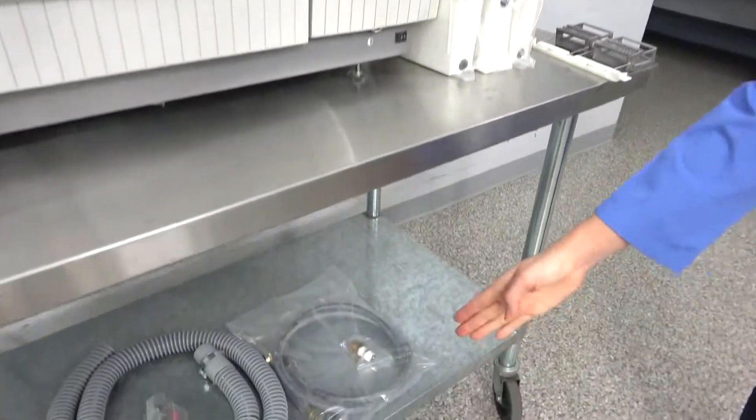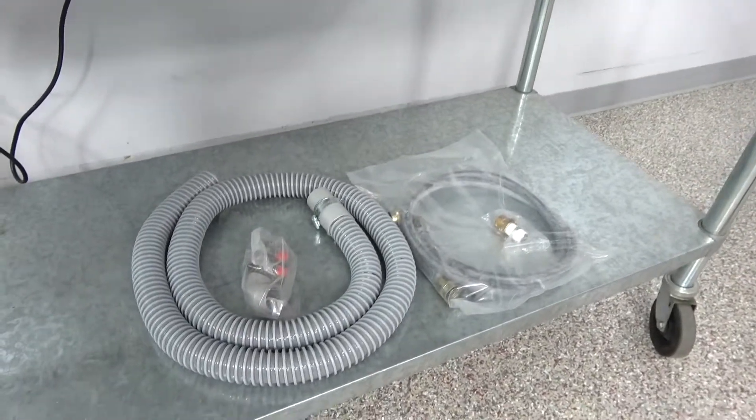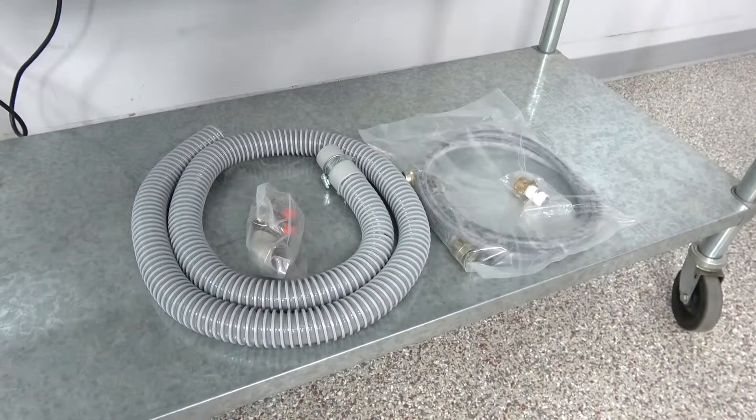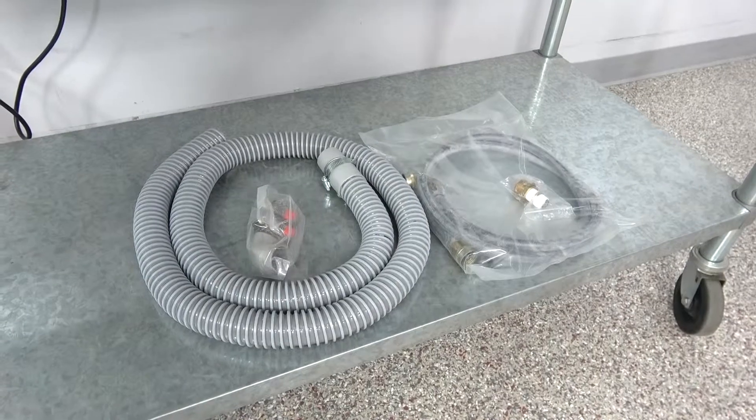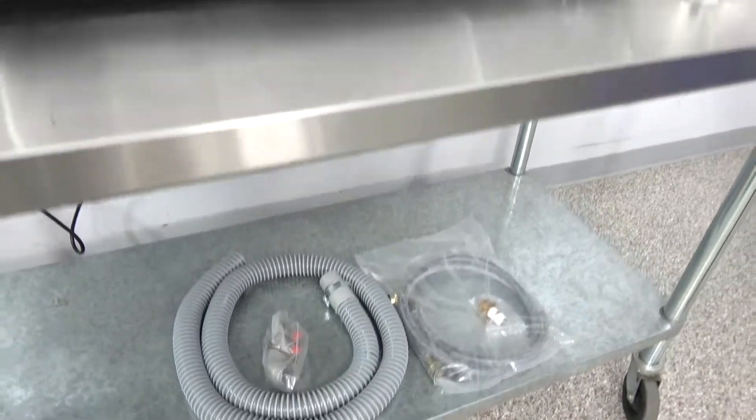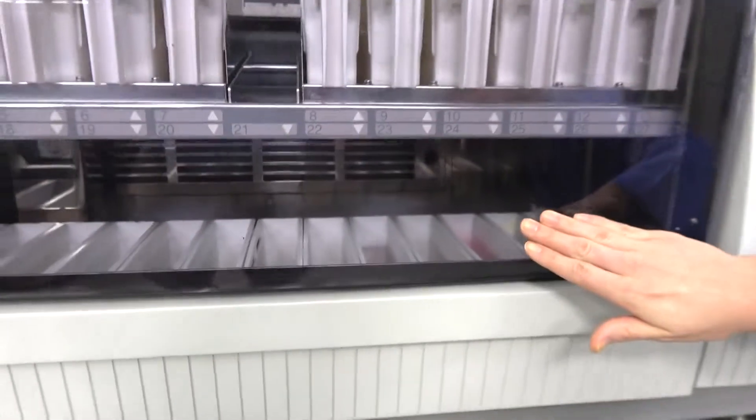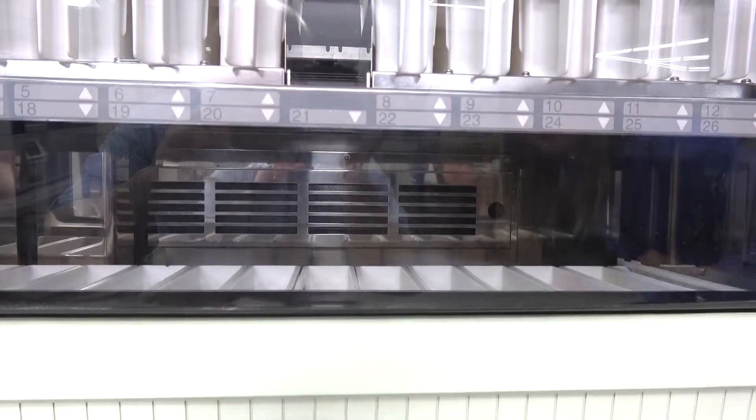So down here we have the waste lines as well. This is equipped with a carbon filter to get rid of your exhaust fumes. And you can see the carbon filter at the very back as well.